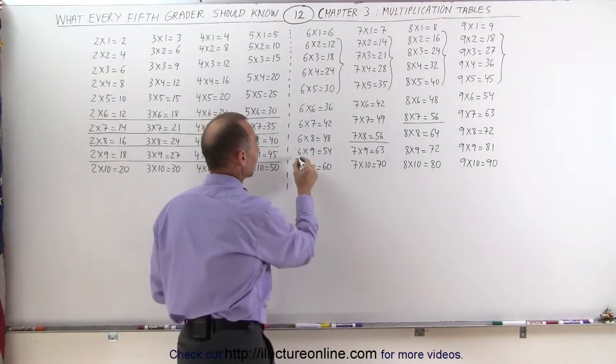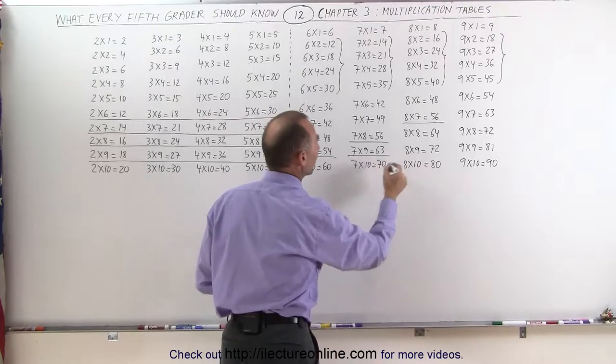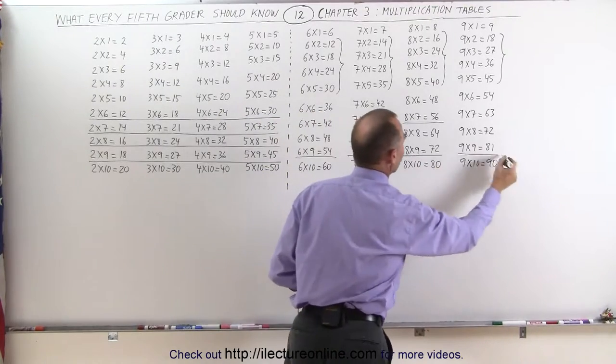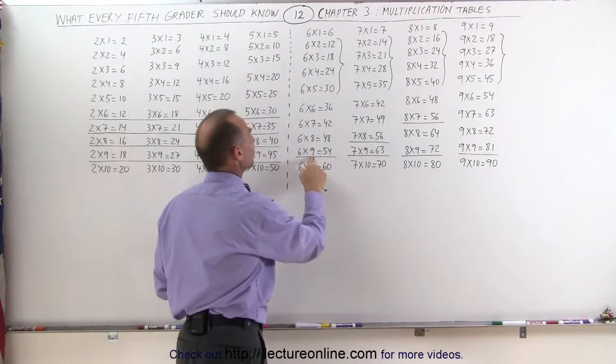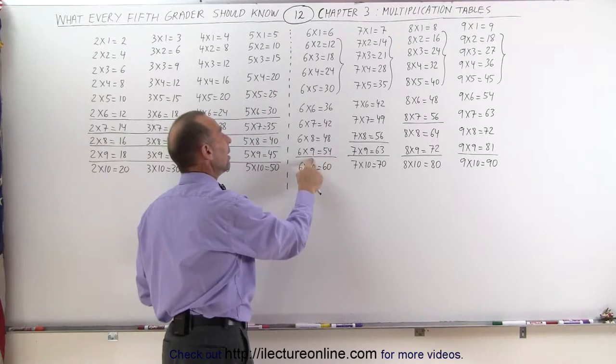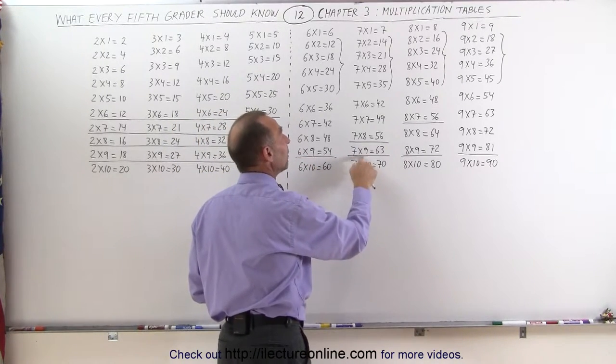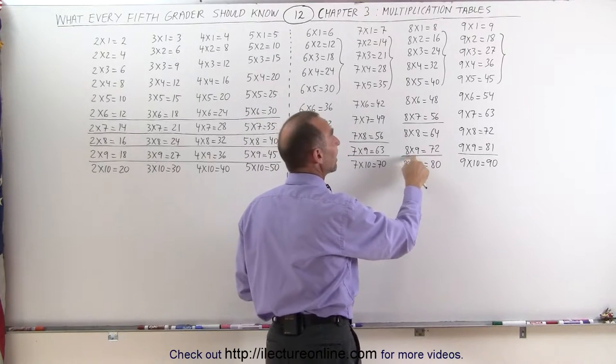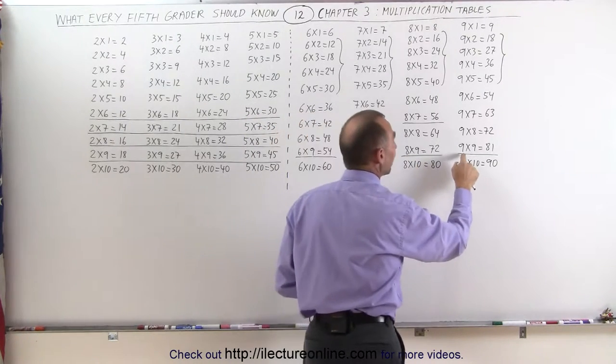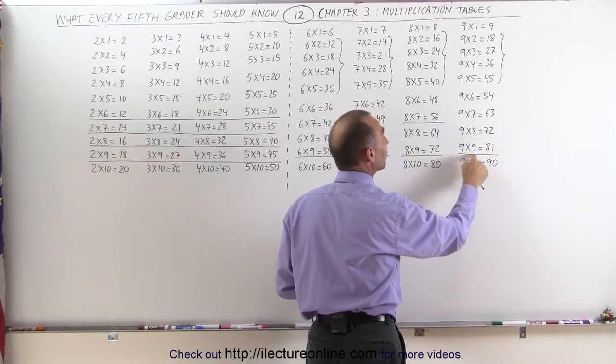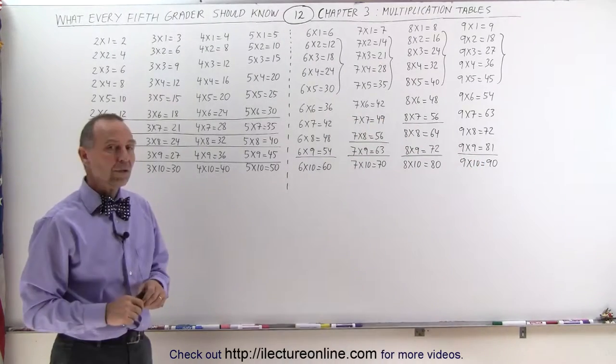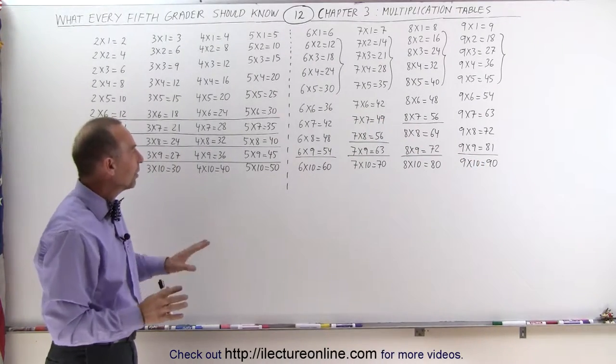Notice, whenever you multiply times 9, you simply multiply times 10, and subtract that number from it. 6 times 9 is the same as 6 times 10, minus 6. 7 times 9 is the same as 7 times 10, minus 7. 8 times 9 is the same as 8 times 10, minus 8. And 9 times 9 is the same as 9 times 10, minus 9. So, when it really comes down to it,